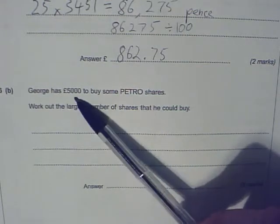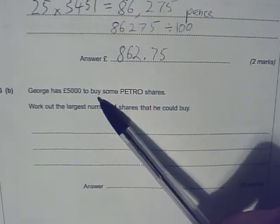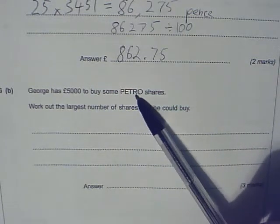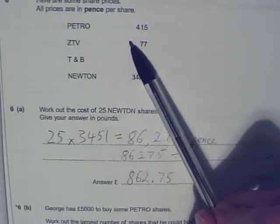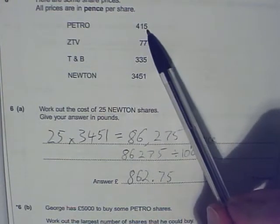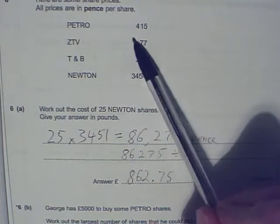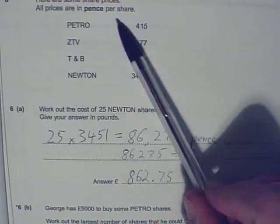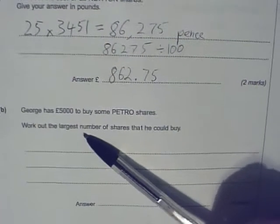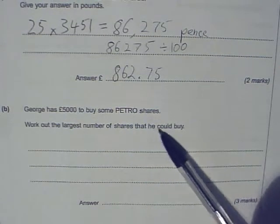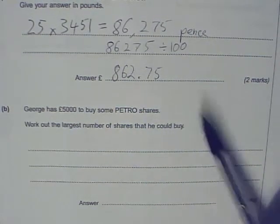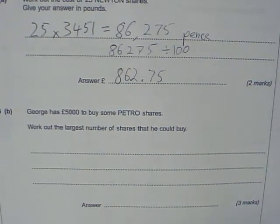George has five thousand pounds to buy some petro shares. Looking back up at petro shares - petro: 415 pence. Work out the largest number of shares he could buy. So how many shares could he buy?